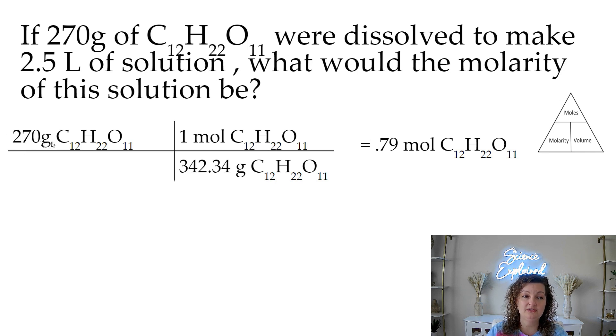But you're going to do your 270 grams, and you're going to do diagonal down the molar mass. So go to the periodic table, look up each of these, multiply it by how many you have, and add it all together. And that gives you 342.34 grams, and that is going to be equivalent to one mole of it.